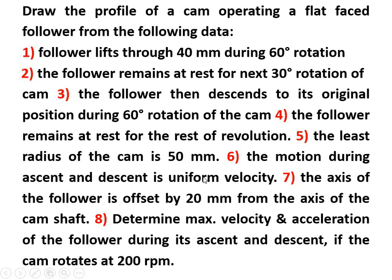The least radius of the cam is 50 mm, also known as the base radius. The motion during ascent and descent is uniform velocity. The axis of the follower is offset by 20 mm from the axis of the camshaft — this is very important data. When offset distance is given, you have to draw the tangent line. Point number eight, for degree engineering students: determine maximum velocity and acceleration of the follower during ascent and descent if the cam rotates at 200 RPM.